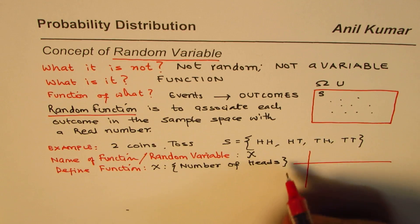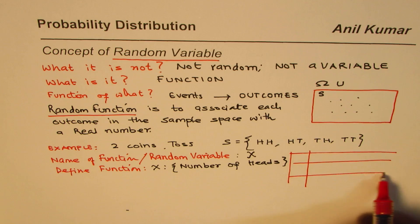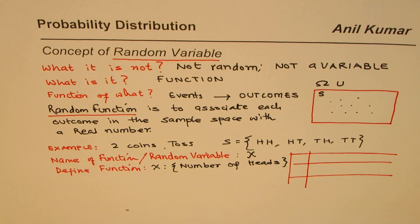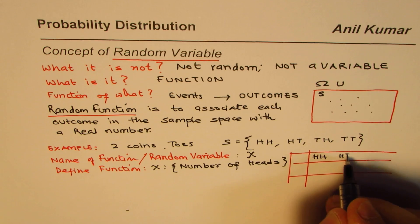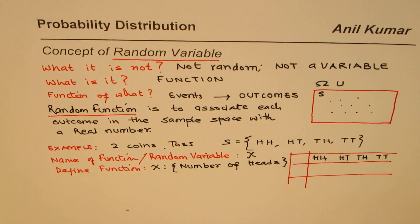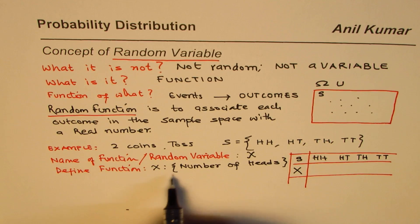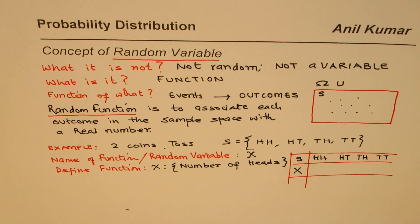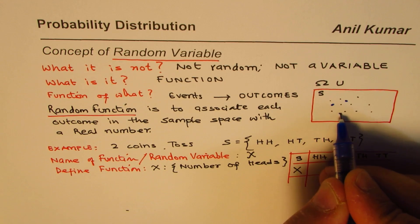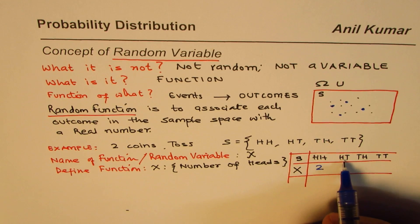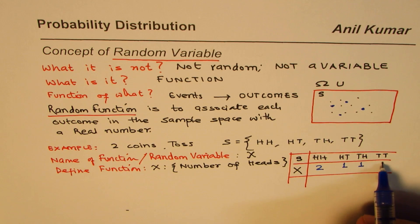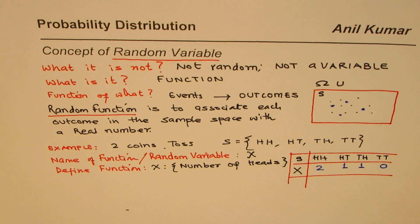Let me make a table to show what is happening. We have to list all the outcomes — in this case four: two heads, head-tail, tail-head, or two tails. We defined the random variable as number of heads. So for two heads, X = 2; for head-tail, X = 1; for tail-head, X = 1; for two tails, X = 0.